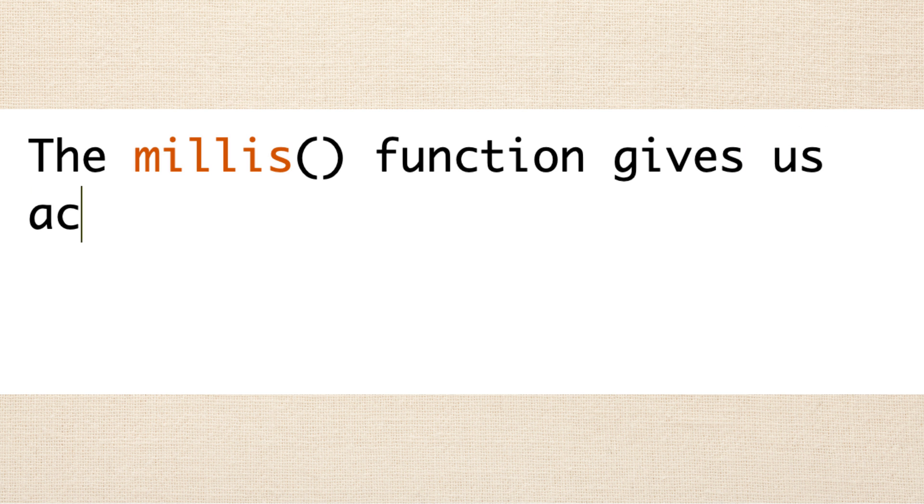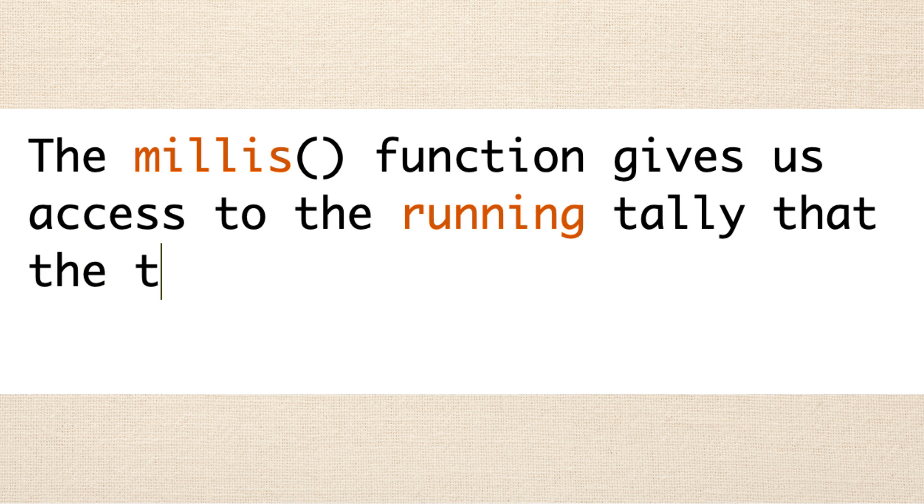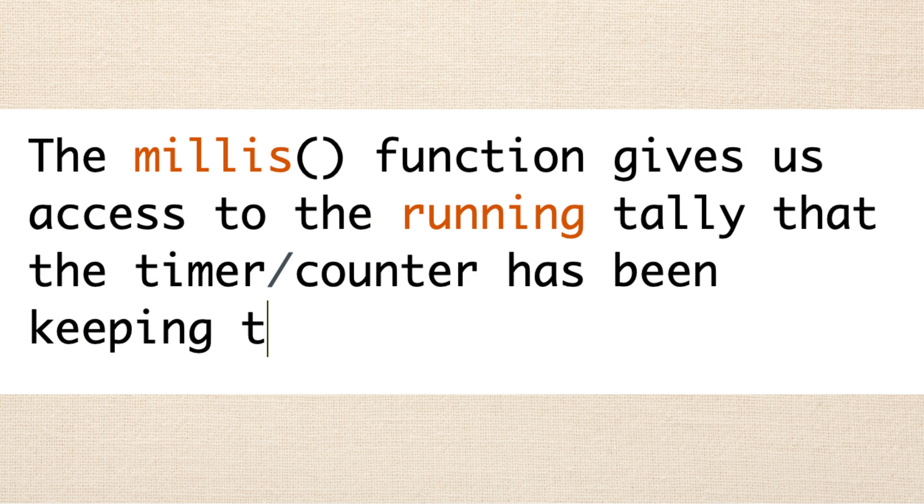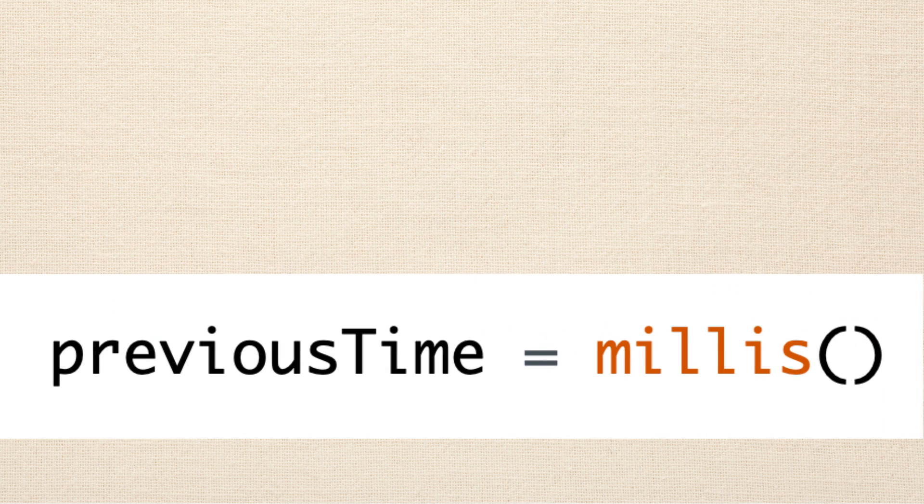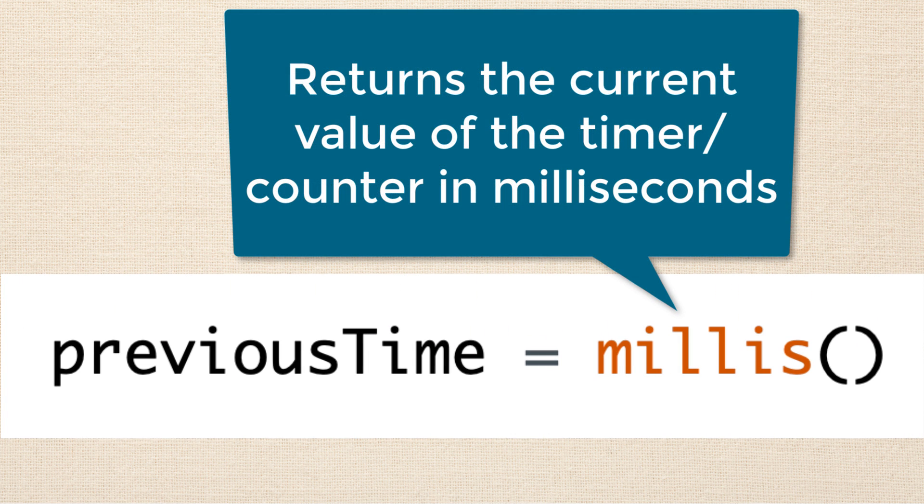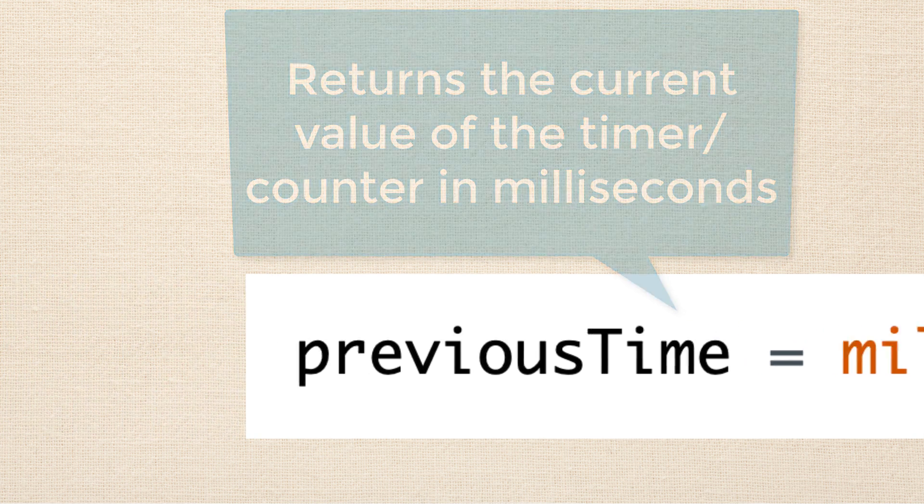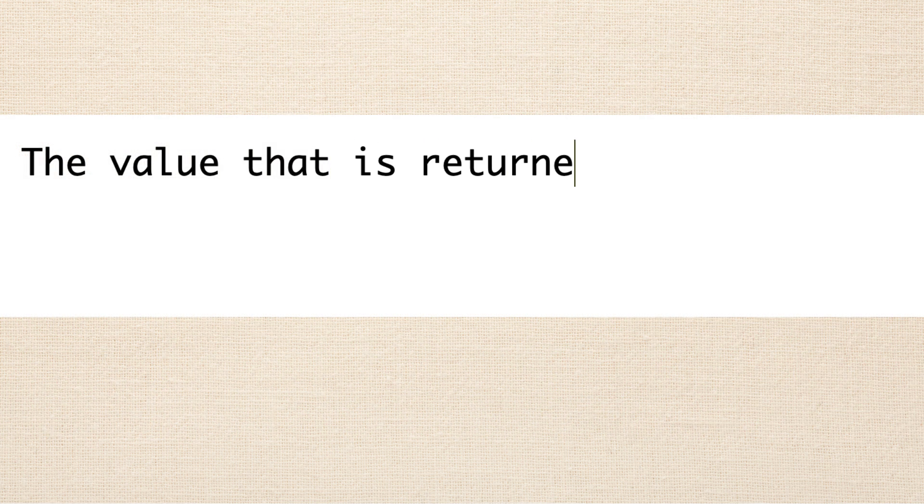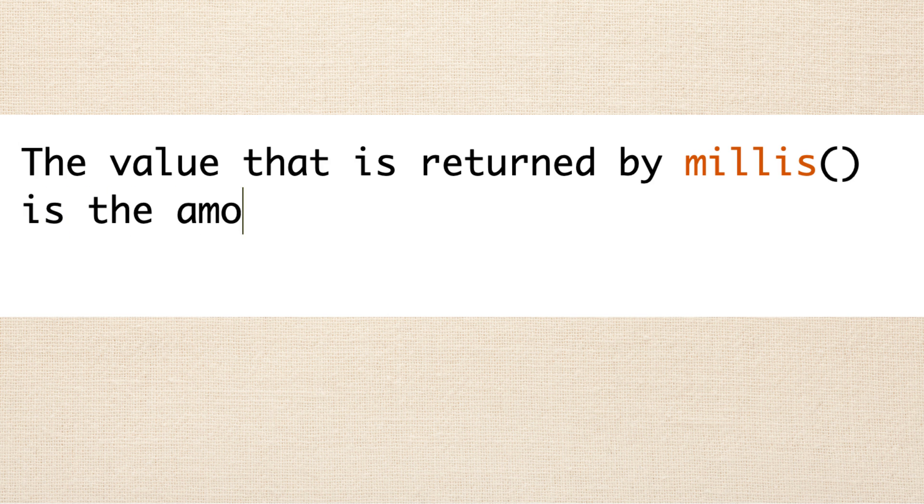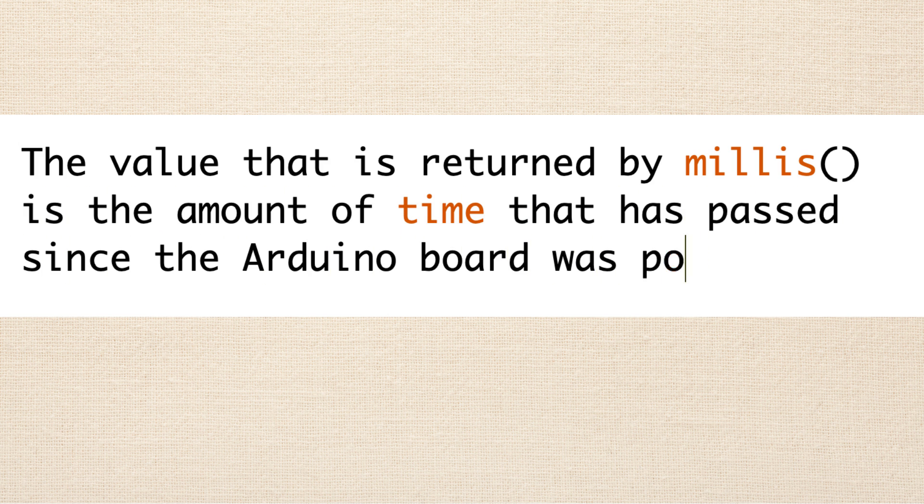Here's the deal. The millis function gives us access to the running tally that the timer counter has been keeping track of. When we call the millis function it tells us the current value of the counter in milliseconds. Said another way, the value that is returned by millis is the amount of time that has passed since the Arduino board was plugged in, you know, like since it had power applied to it.